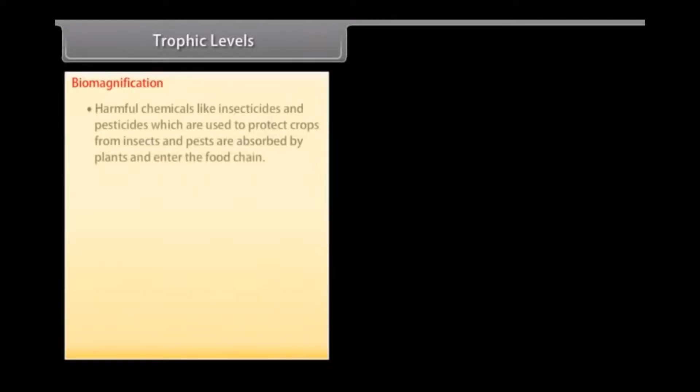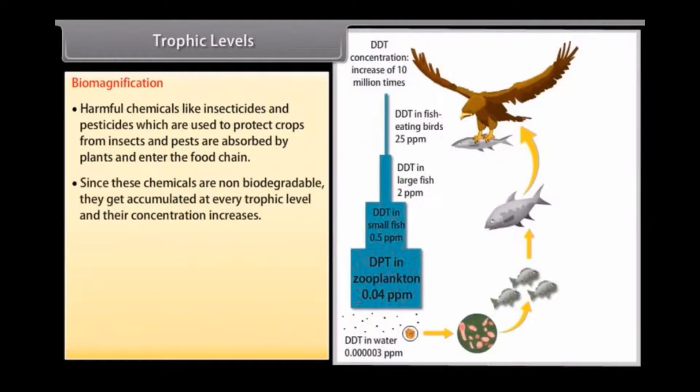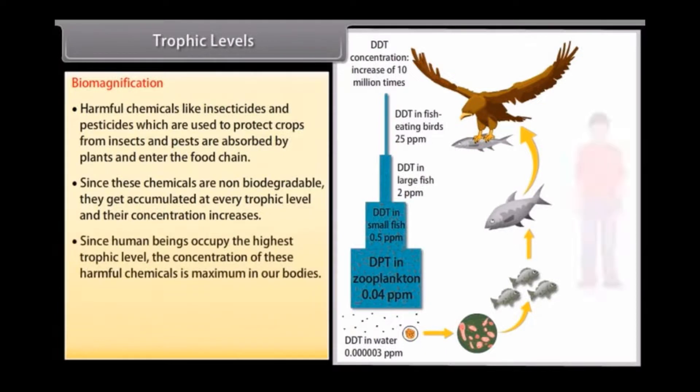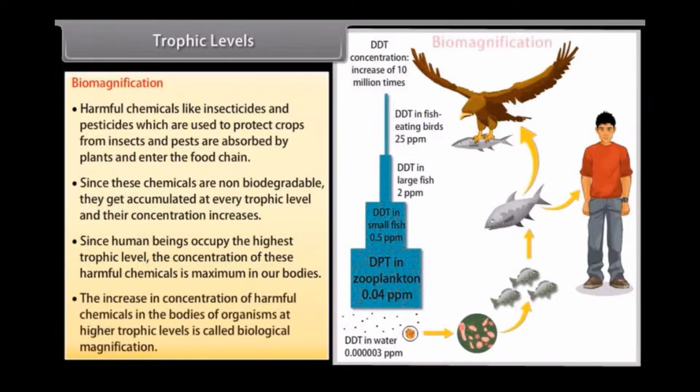Biomagnification. Harmful chemicals like insecticides and pesticides, which are used to protect crops from insects and pests, are absorbed by plants and enter the food chain. Since these chemicals are non-biodegradable, they get accumulated at every trophic level and their concentration increases. Since human beings occupy the highest trophic level, the concentration of these harmful chemicals is maximum in our bodies. The increase in concentration of harmful chemicals in the bodies of organisms at higher trophic levels is called biological magnification.